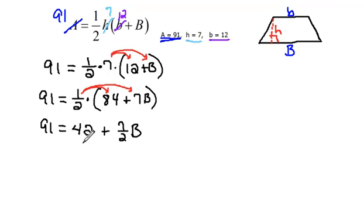Now, at this point, I could subtract 42 from both sides. So if I subtract 42, then we would get 91 minus 42, let's see, what would that be? That would be 49. So 49 would equal 7 halves b.